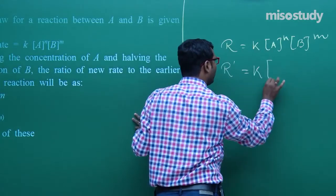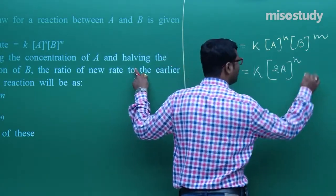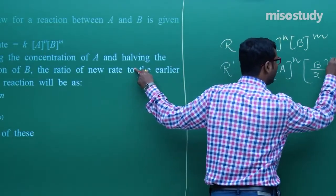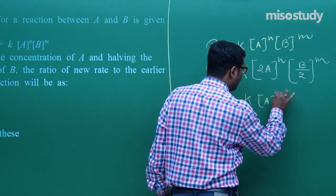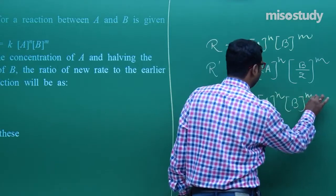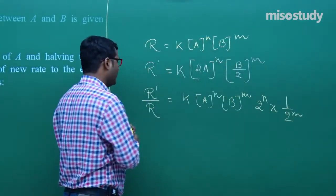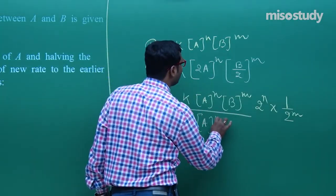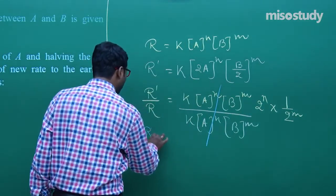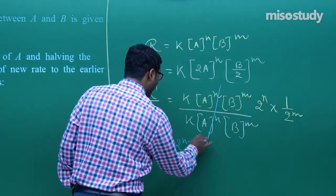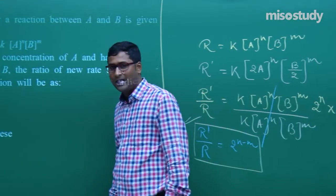Dividing R' by R: R'/R = K·[2A]ᴺ·[B/2]ᴹ divided by K·[A]ᴺ·[B]ᴹ. The [A]ᴺ and [B]ᴹ terms cancel. This gives R'/R = 2ᴺ × (1/2)ᴹ, which equals 2ᴺ⁻ᴹ. So the ratio of the new rate to the old rate is 2^(N−M).